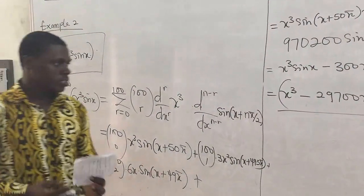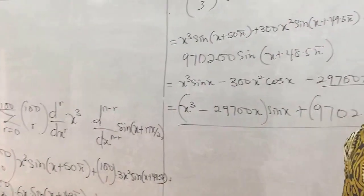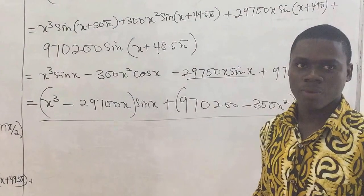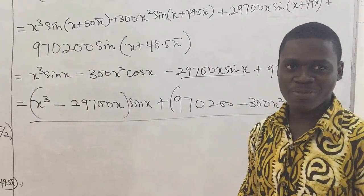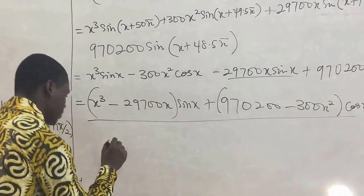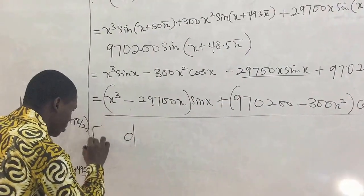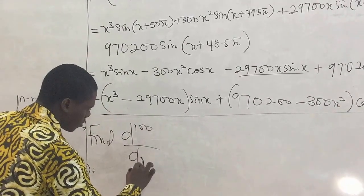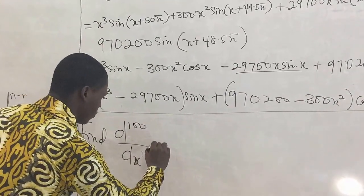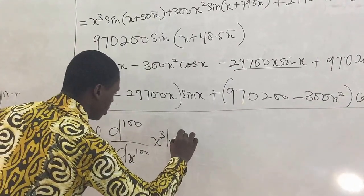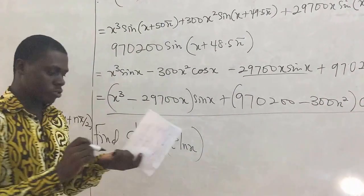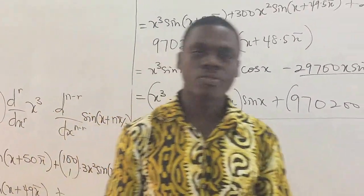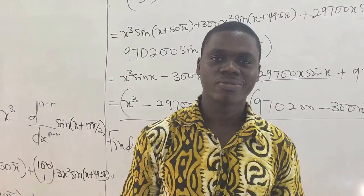I hope you found this one very helpful and this will end this video. But I know you are very hard working, so let me give you one to try. So find the 100th derivative of x cubed cos x. So we just go through the procedure and you will be successful in doing this. So thanks very much and I'll see you in the next video. Bye.